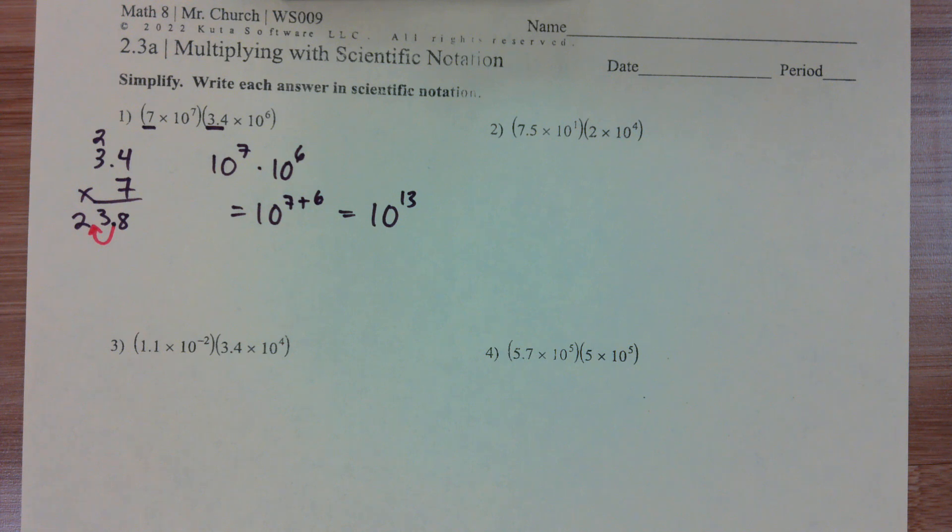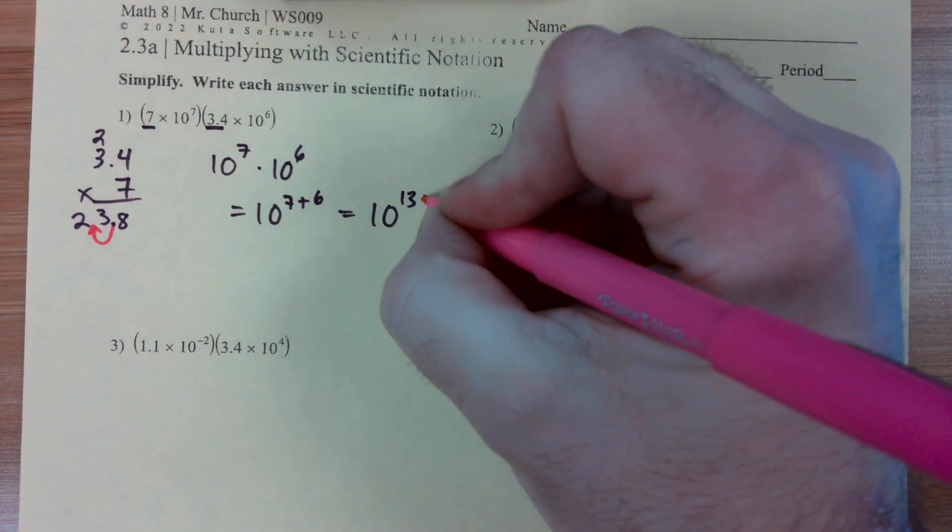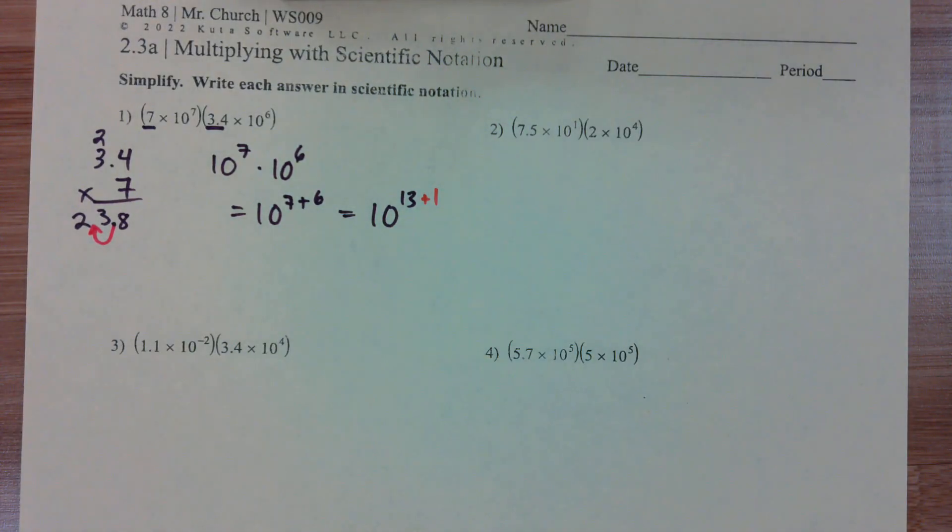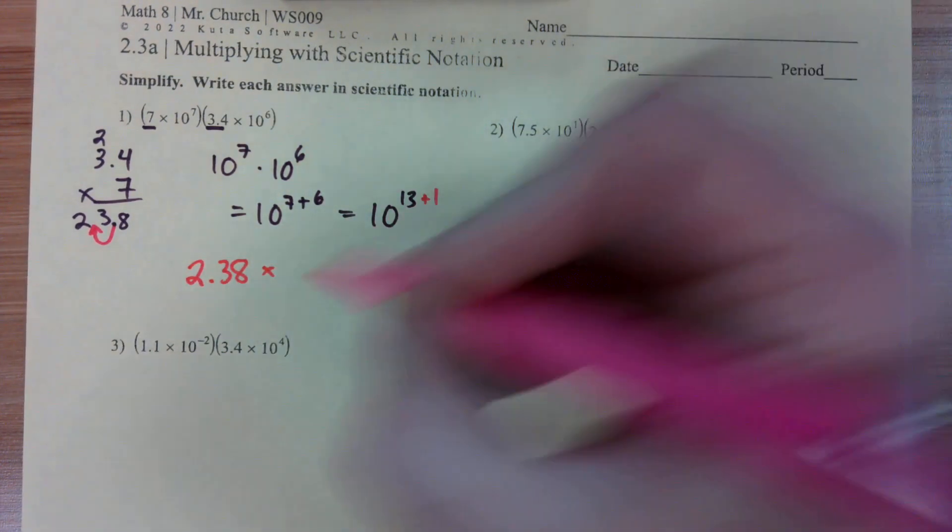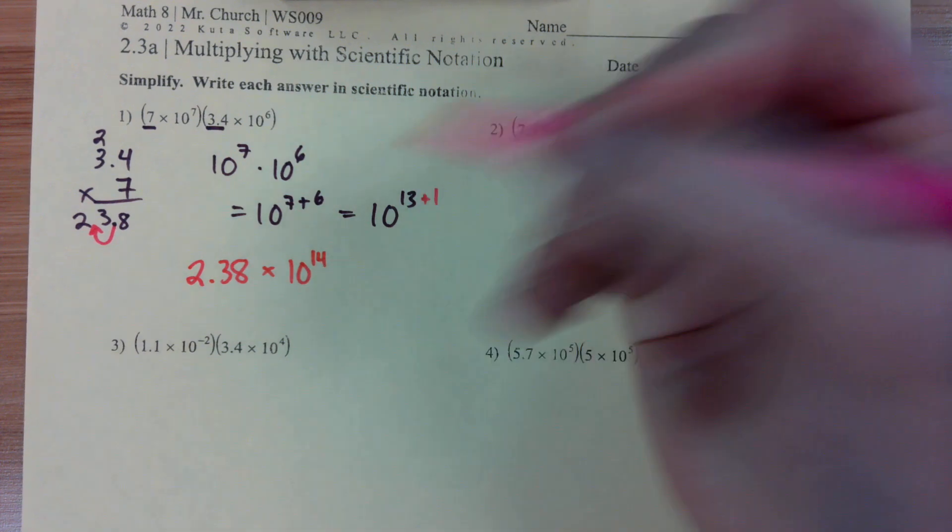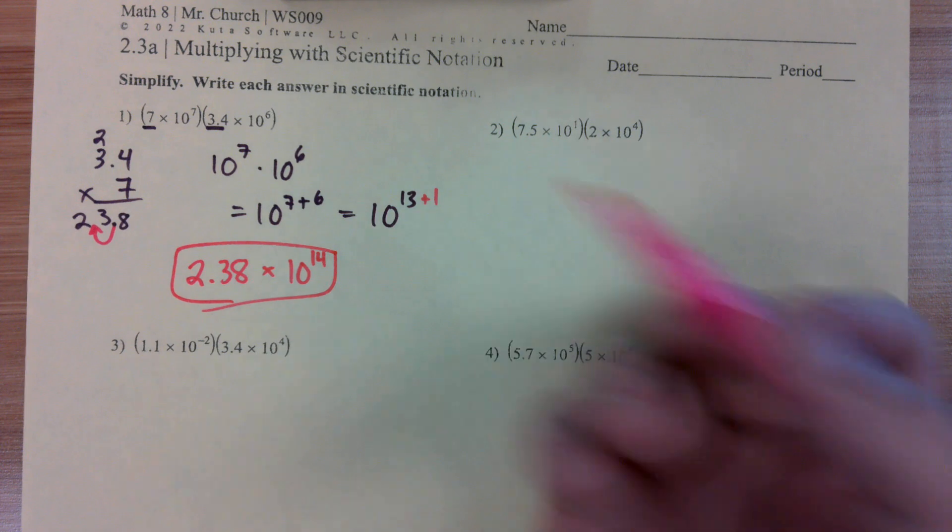Zayla, let's go ahead and go back to your original seat please. So we move this decimal over one space, that means we have to add one to our power of 10. So we get 2.38 times 10 to the 14th power.